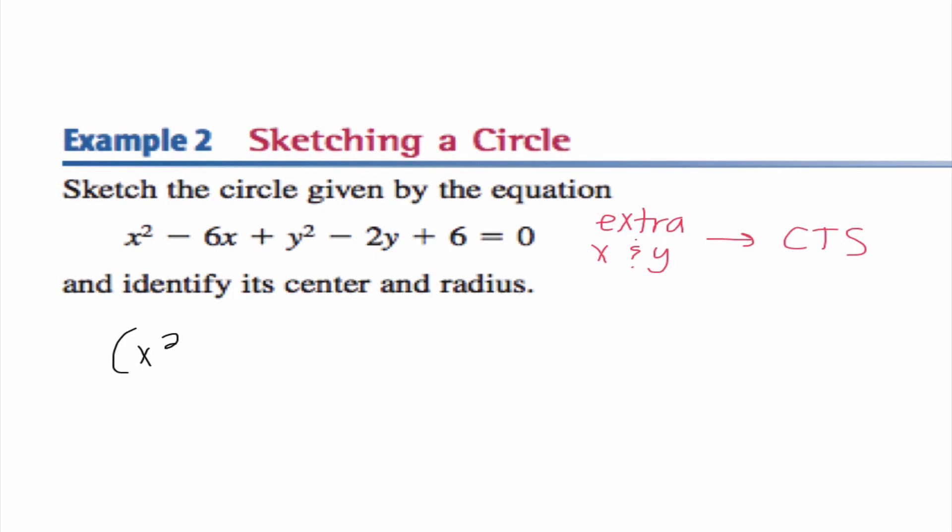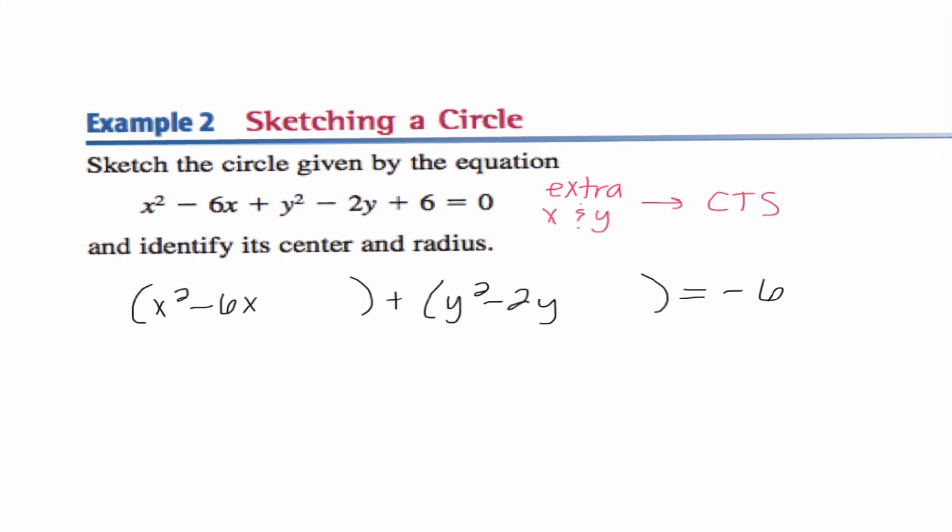So I'm going to group my x terms together in a parenthesis, I'm going to group my y terms together in a parenthesis, and I'm moving that constant over to the other side. So this is a skill that we did a lot back in Algebra 2, and hopefully you guys kind of remember it. But in order to determine what I'm adding inside here, I'm going to take this middle coefficient. So I'm going to do this off to the side. I'm going to take -6. I'm going to divide it by 2 and square it. So -6 divided by 2 is -3. -3 squared is 9. So I'm going to balance this by adding 9 to both sides of the equation.